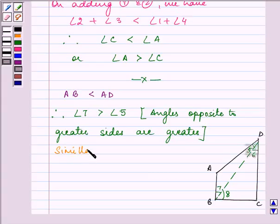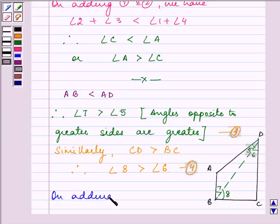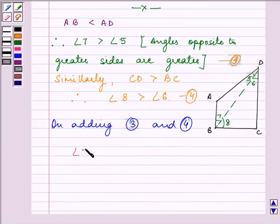Similarly, we have the knowledge that CD is greater than BC in triangle CDB. So therefore, angle 8 will be greater than angle 6. On adding these, we have angle 7 plus angle 8 is greater than angle 5 plus angle 6. Angle 7 plus angle 8 is angle B is greater than angle 5 plus angle 6 is angle D.